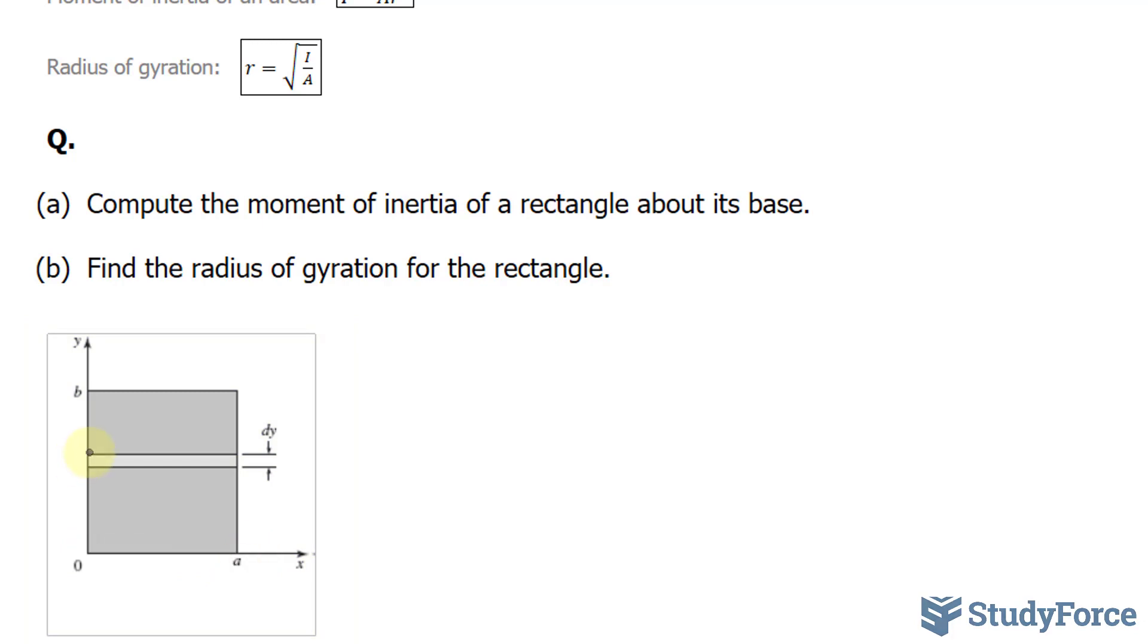And so we'll take the area of strips that have a known width of A and an unknown height or length of dy. Now since we're taking rectangles all throughout the y axis, we have to do it with respect to y. So the area of these strips can be shown as dA is equal to the known width of A times its height of dy.